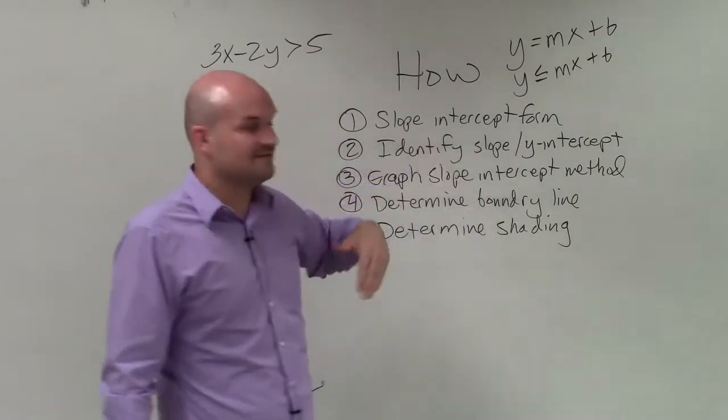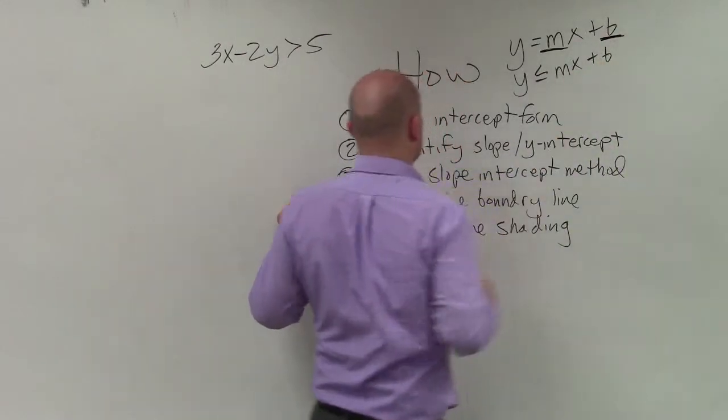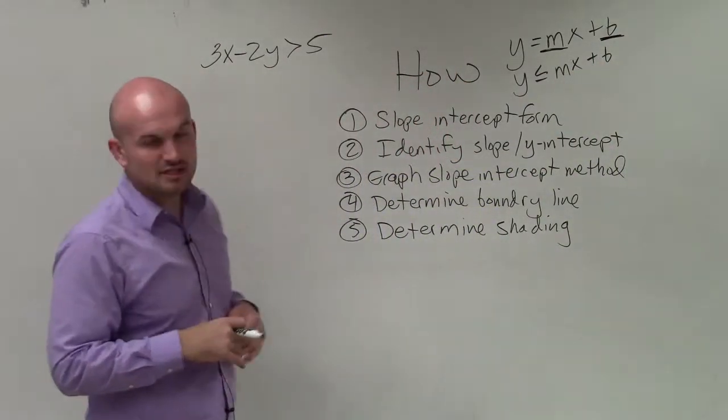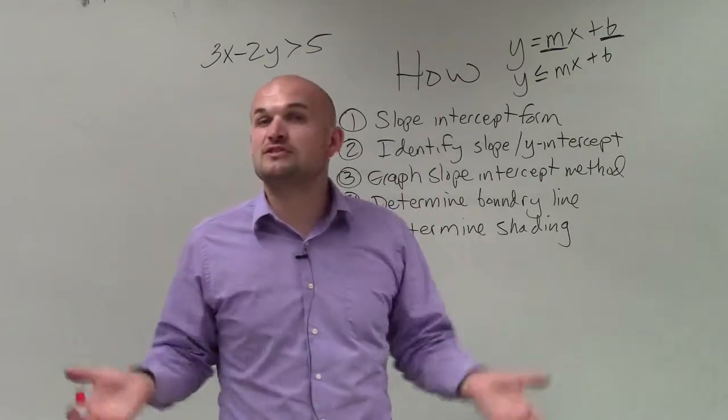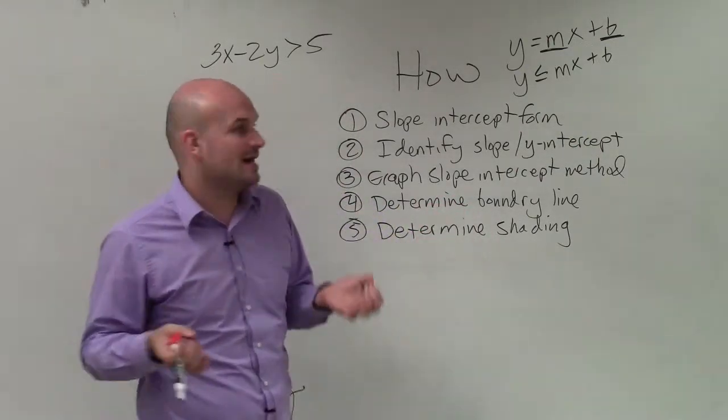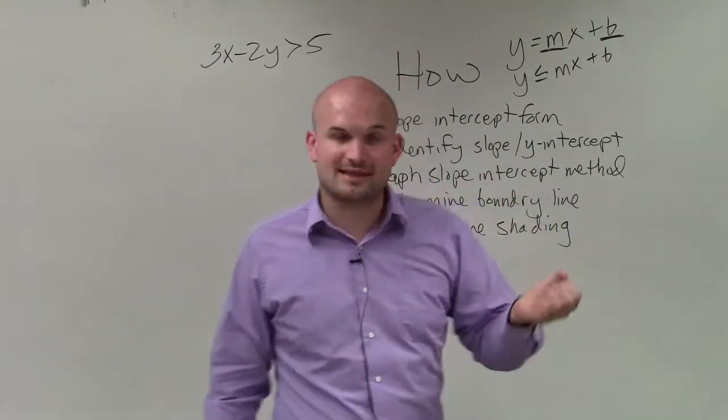The next thing is identify the slope and the y-intercept, where m is your slope, b is going to be your y-intercept. Then, graph using the slope-intercept method. And again, regardless if it's an equation or an inequality, the first thing you want to do is plot the y-intercept. So you identify what the y-intercept is, go to the y-axis, and plot that point.